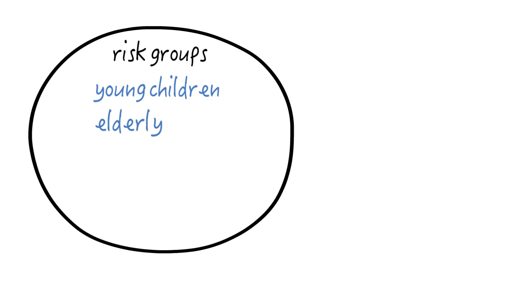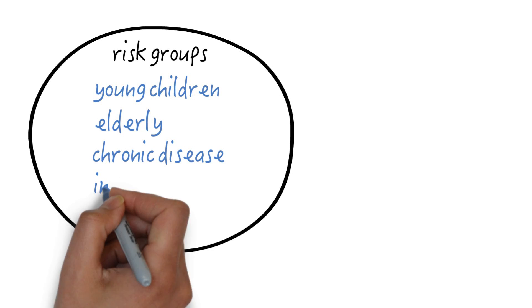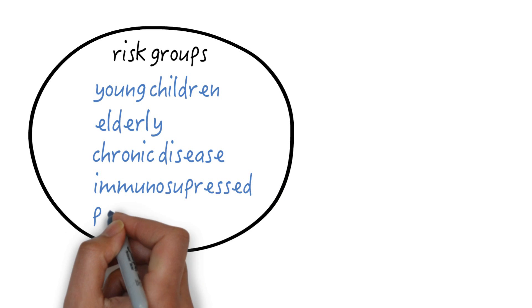These include young children, those who are old, people with chronic diseases like diabetes, heart disease or immune suppression and women who are pregnant.